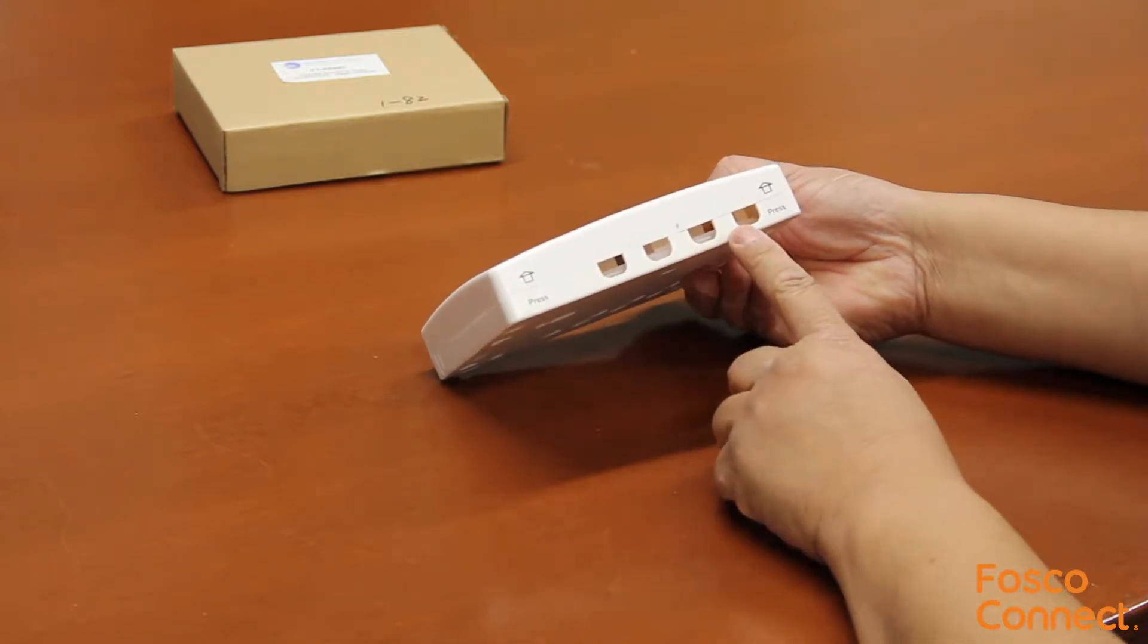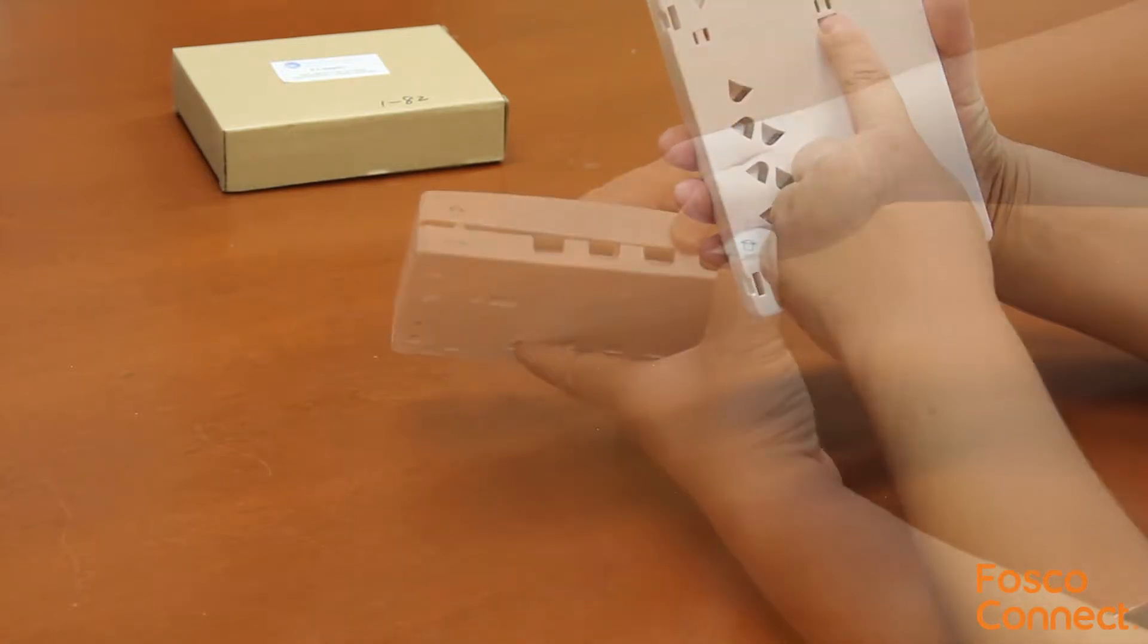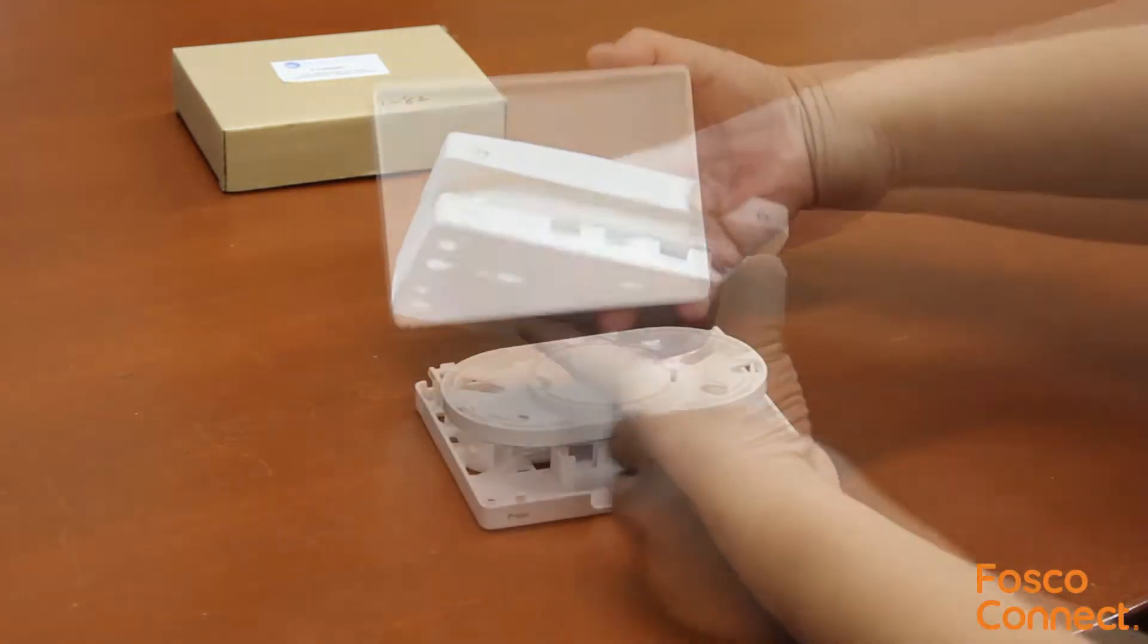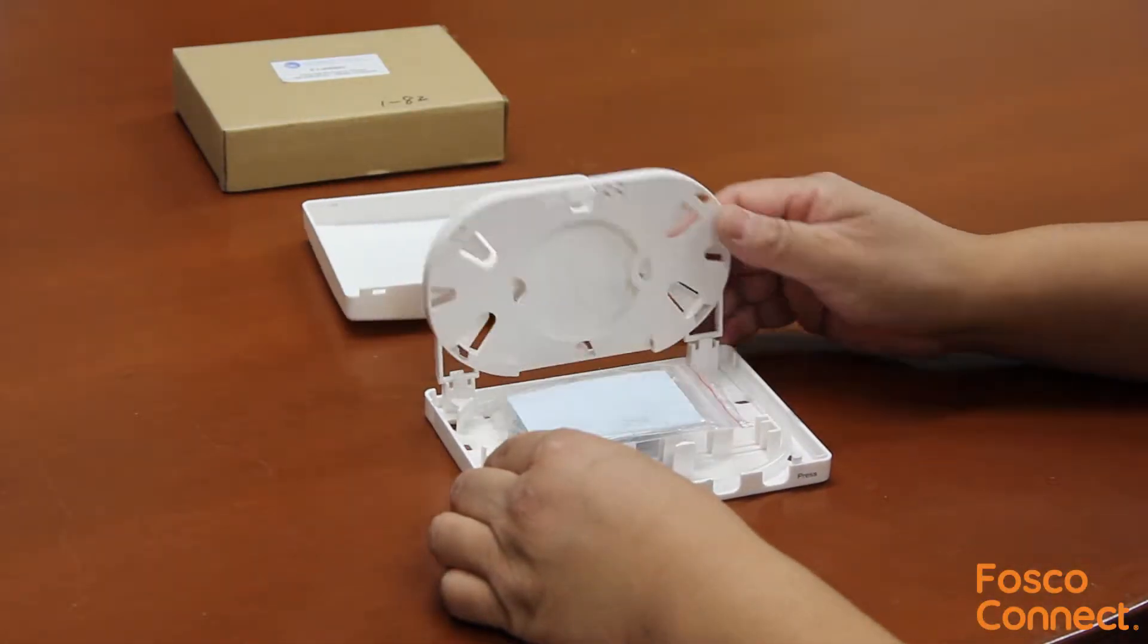There are 4 output ports in the front. The box can be wall mounted in any way you like. Let's open the box. Here's the top cover, and here's a splice trace to splice and route your fibers.